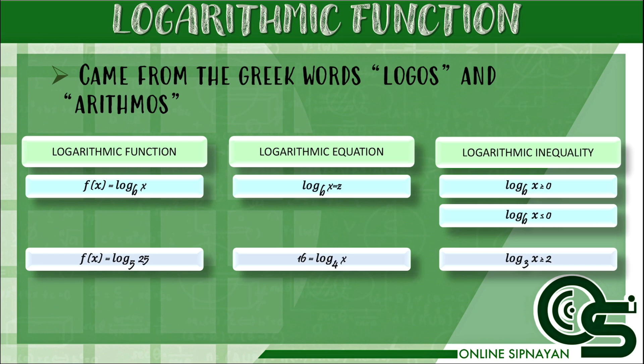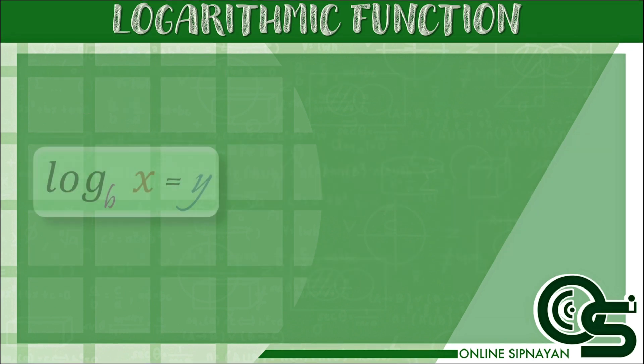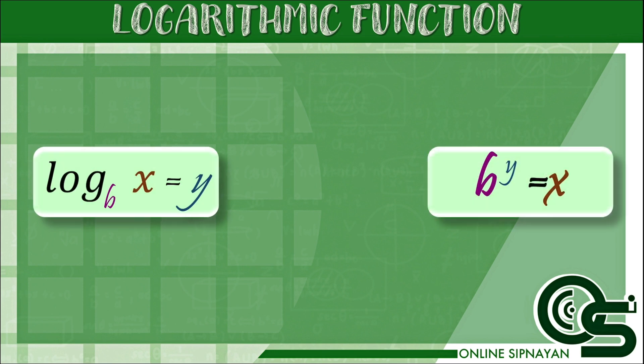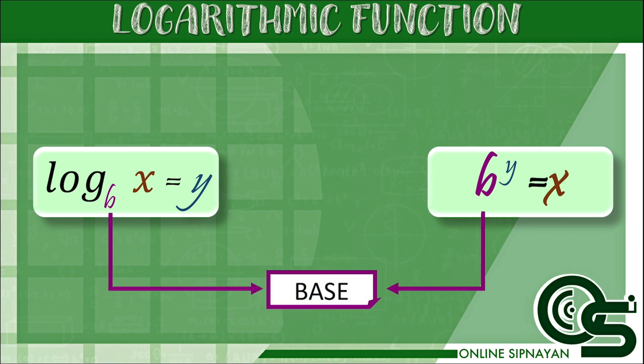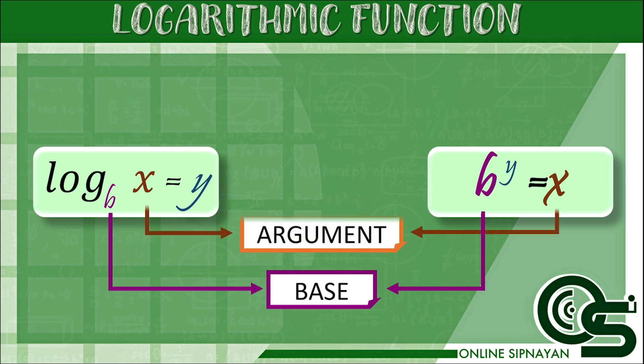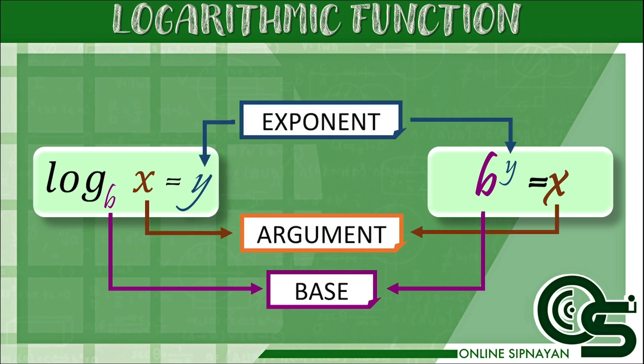In logarithmic form, logarithm of x with base b is equal to y. The exponential form will be b raised to y is equal to x, where b is the base, x is the argument, and y is the exponent.